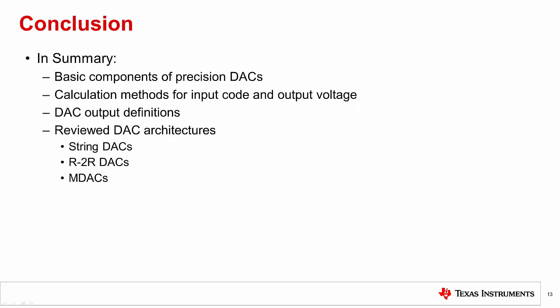Okay, with that we have introduced the most essential concepts for precision DACs. In summary, we introduced the basic components of a precision DAC. We also introduced a few calculation methods for determining our VLSB size and to calculate the output voltage based on an input code. We also defined some of the key terms for a DAC output's ideal transfer function. And finally, we reviewed some DAC architectures such as string DACs, R2R DACs, and MDACs.